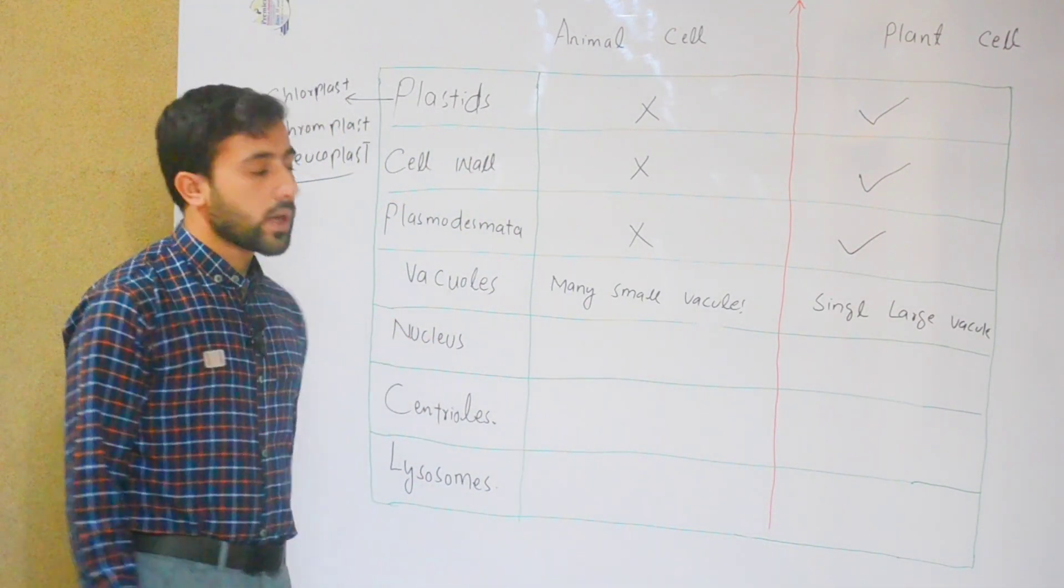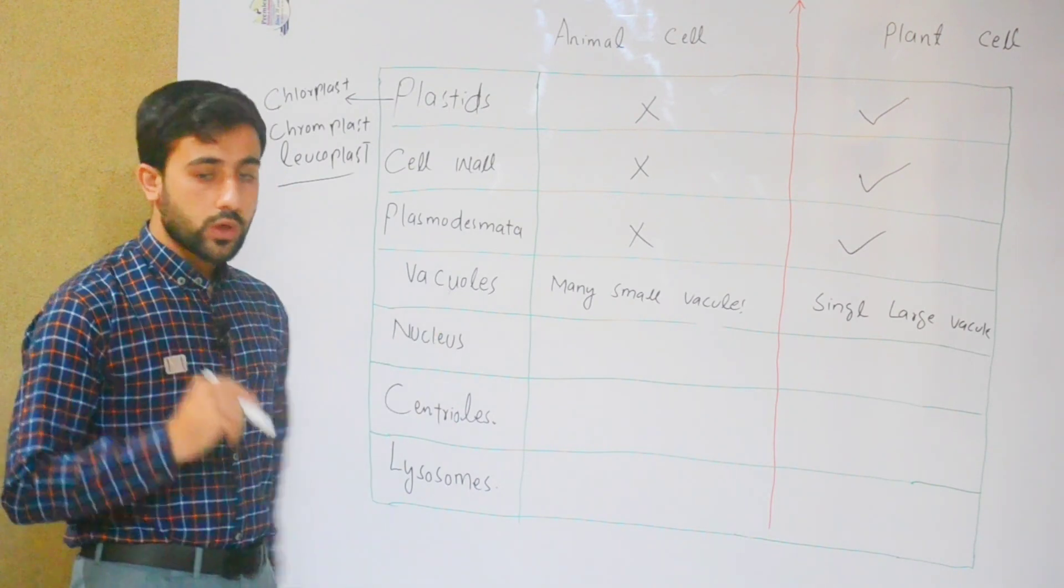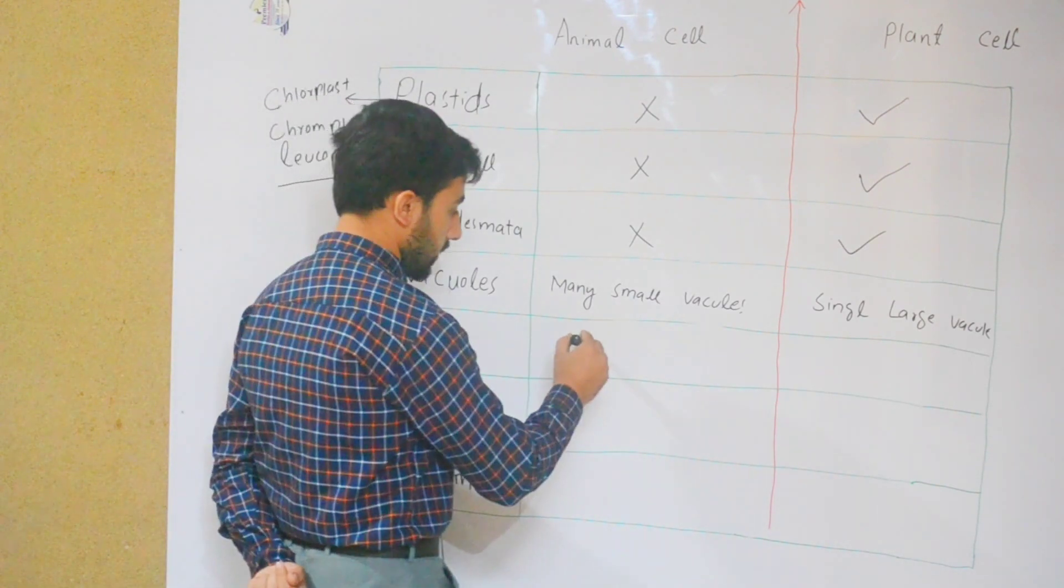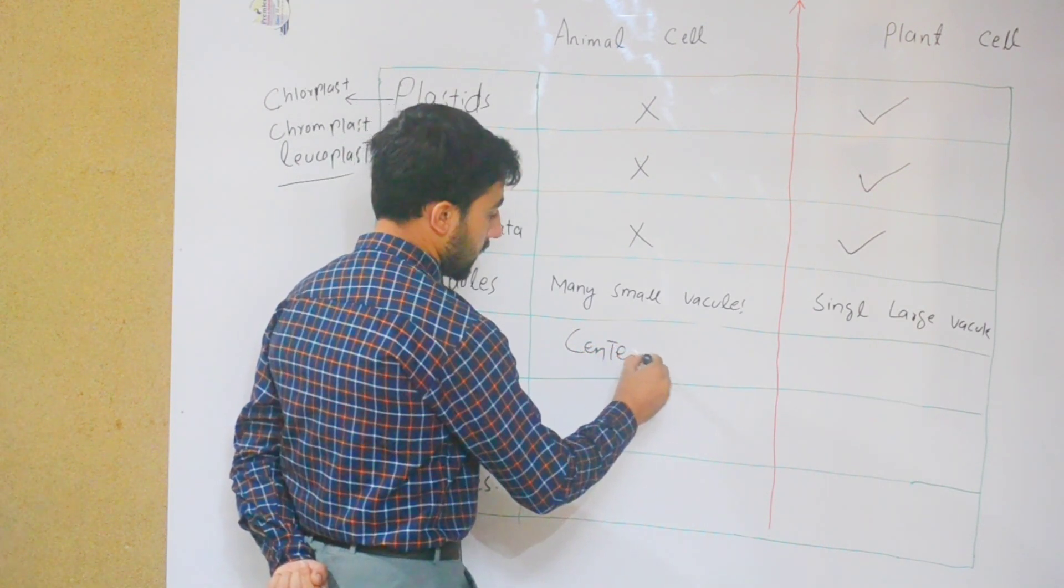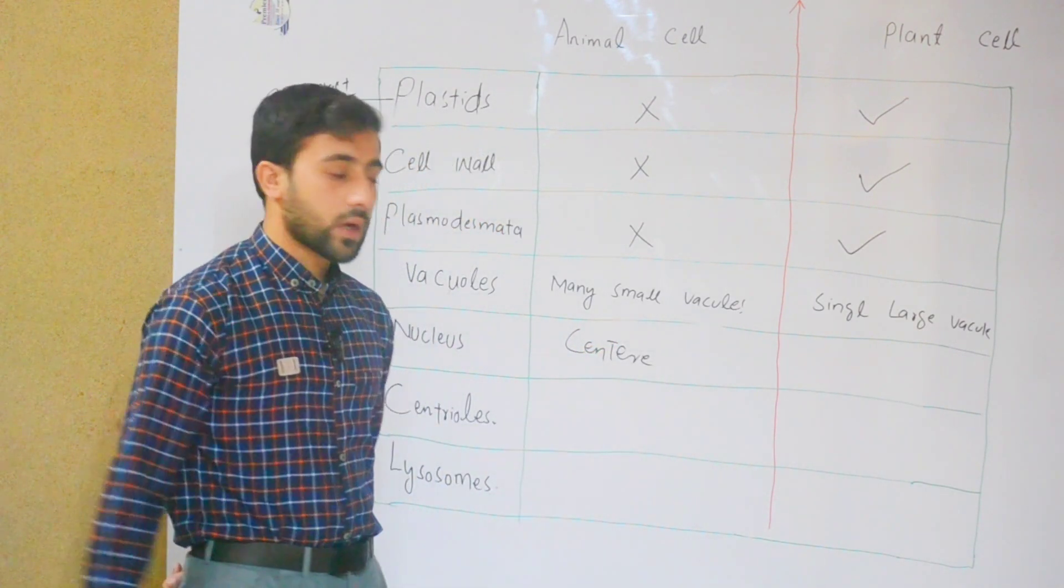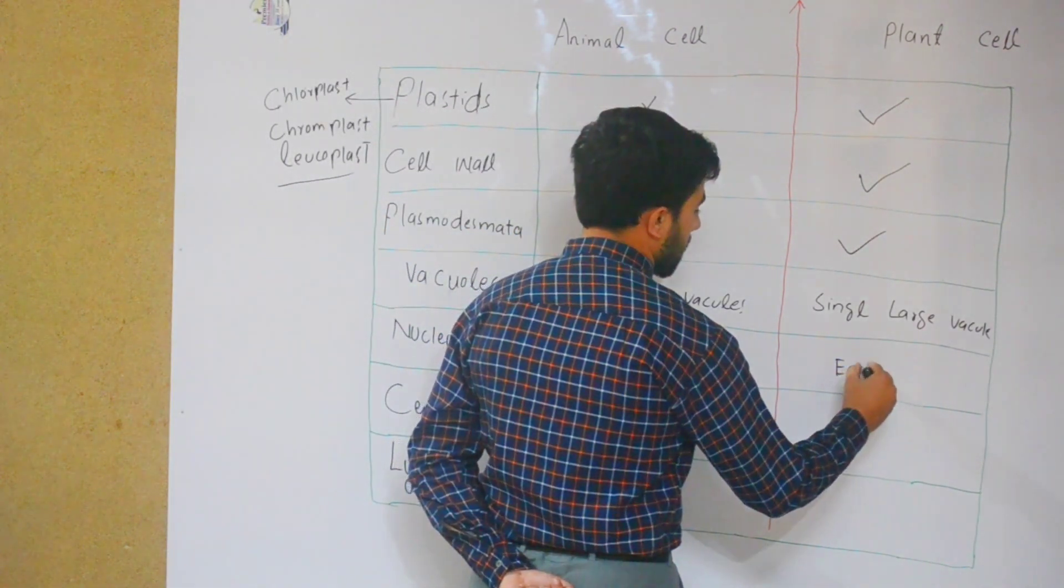Next is nucleus. In animal cells, the nucleus is in the center. The center of the animal cell is where the nucleus is located.